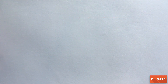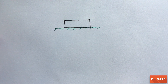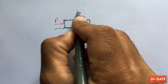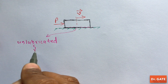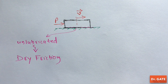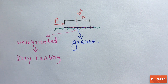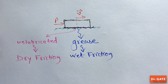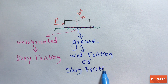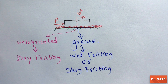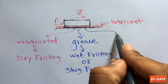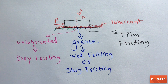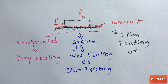For our better understanding, let's take a block on a surface and apply a pushing force P on it. Because of this pushing force, the block acquires a velocity V in the direction of the applied force. If the surface is unlubricated, the friction is known as dry friction. If we apply a thin layer of grease, it becomes wet friction, also known as skin friction. If we apply a thick layer of lubricant such that the surfaces are separated, the friction is known as film friction. Note that in fluid mechanics we study film friction as viscous friction.